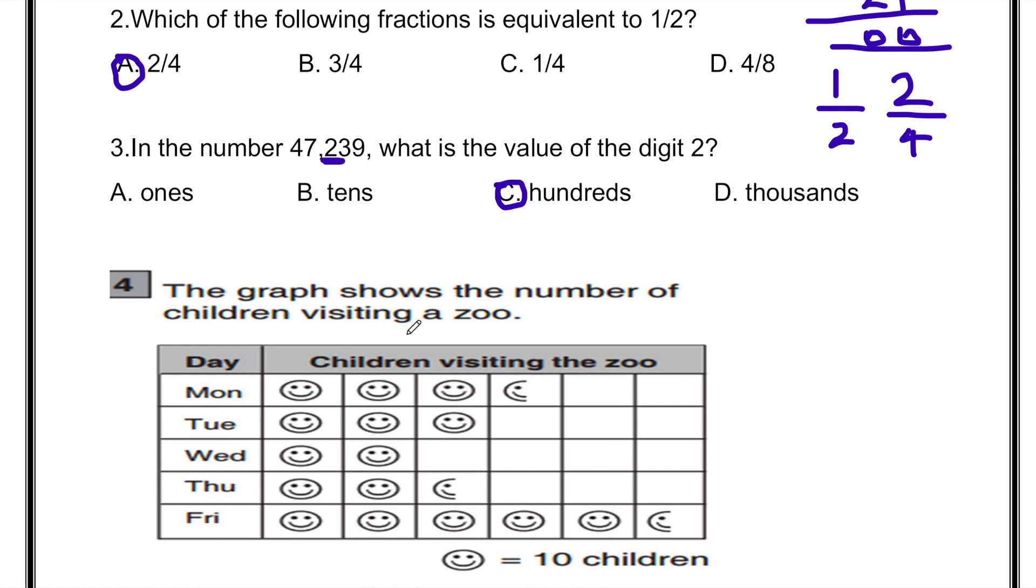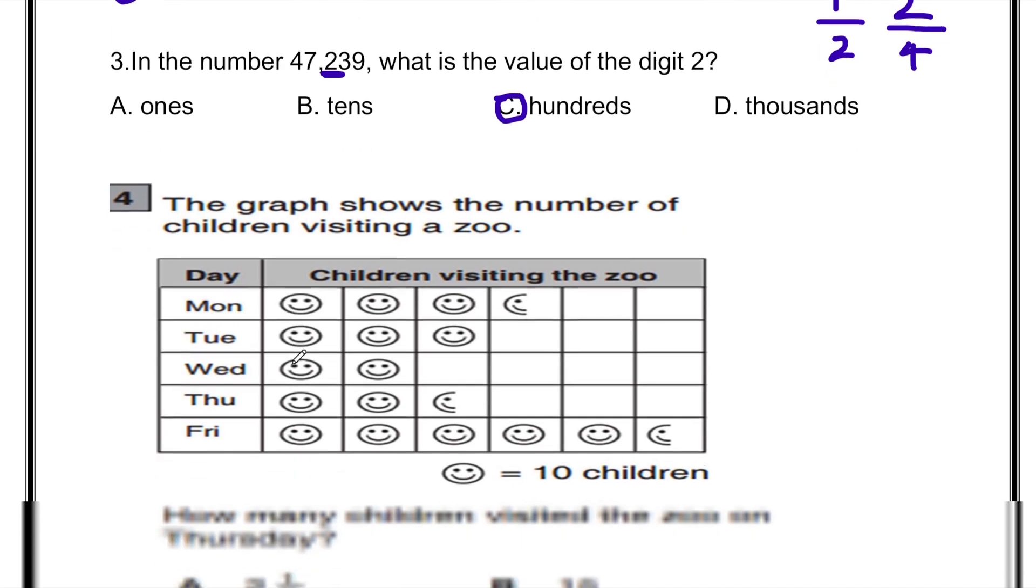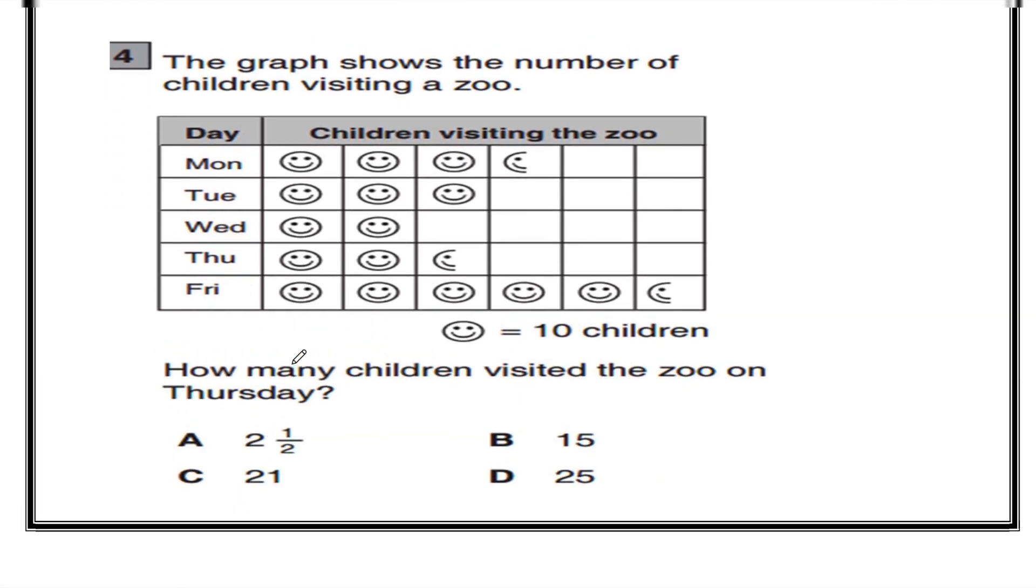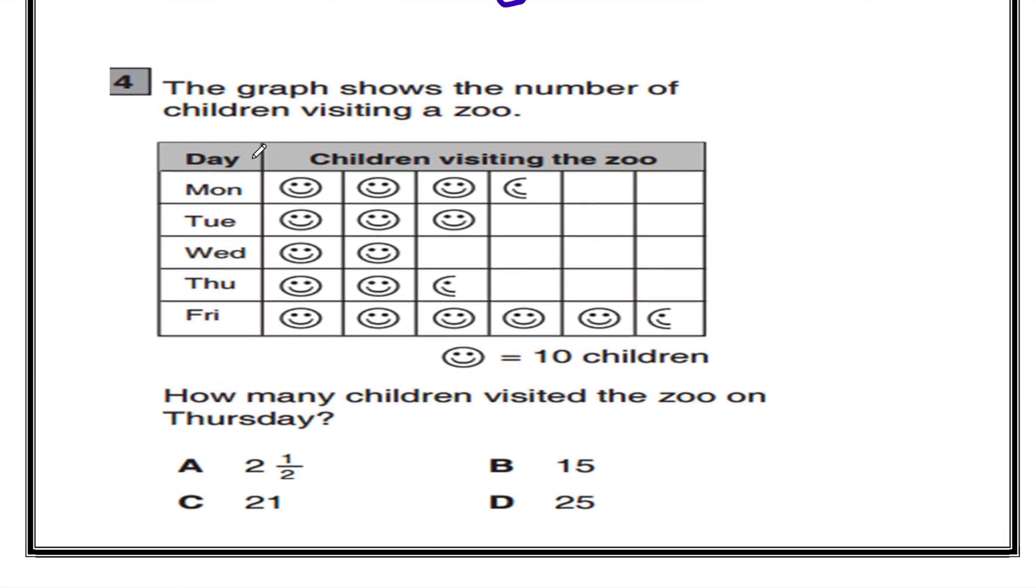The graph shows the number of children visiting a zoo. So first let's read the question. How many children visited the zoo on Thursday? One smiley equals 10 students. On Monday, there were 10, 20, 30. Half smiley will equal 5, so 35 students visiting the zoo.